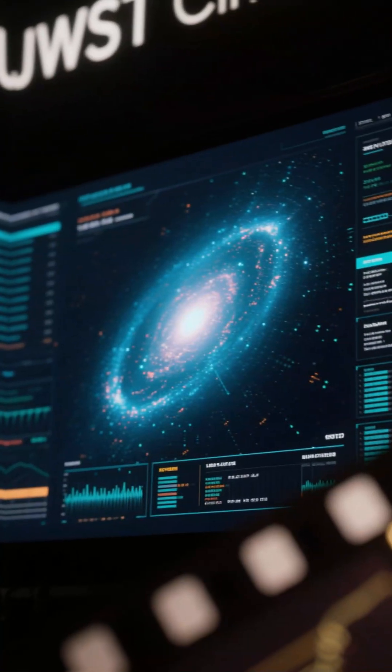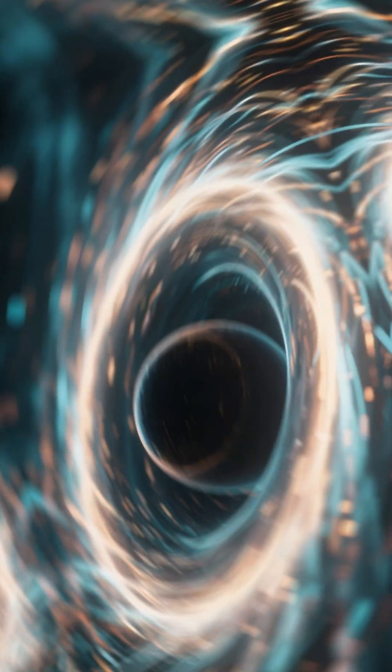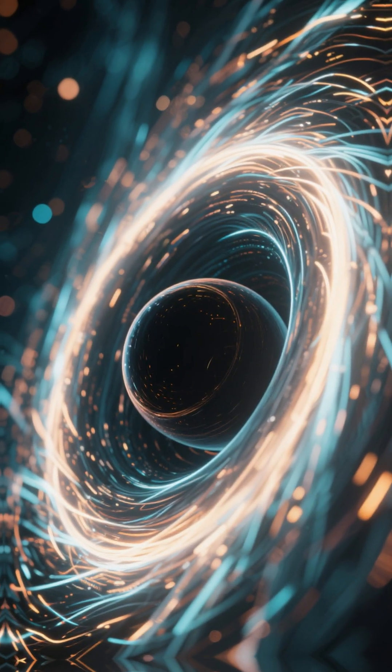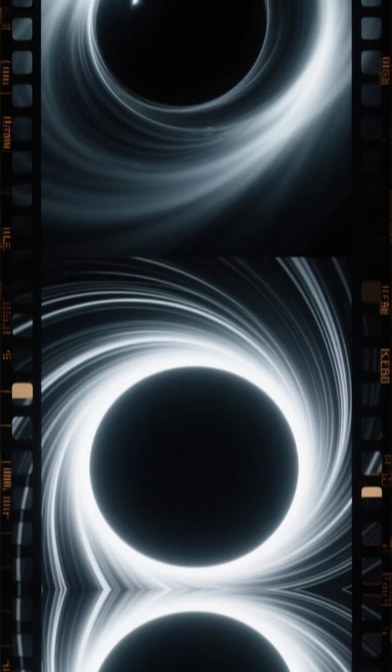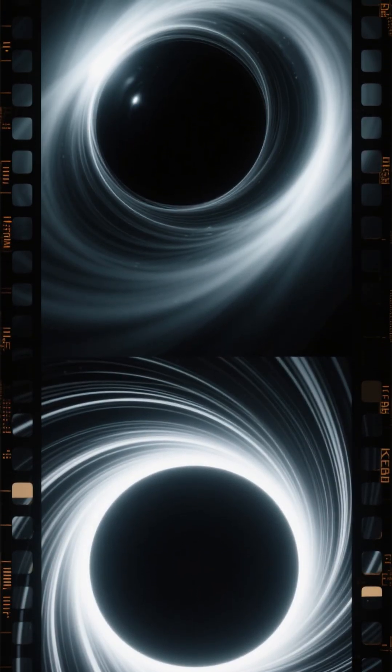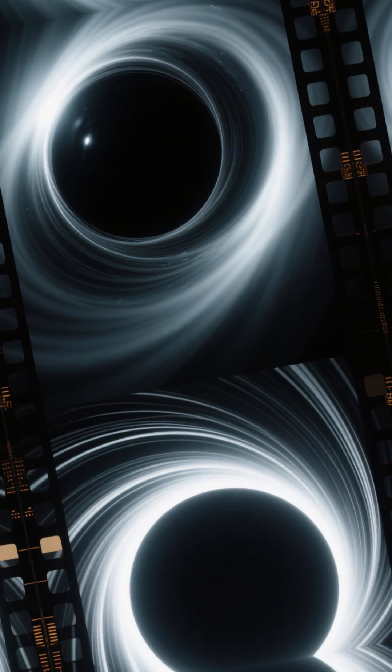And what they saw might rewrite cosmic history. They found light warping in ways that can't be explained by normal black holes, but matches models of a spinning Kerr black hole, which might be our cosmic origin.